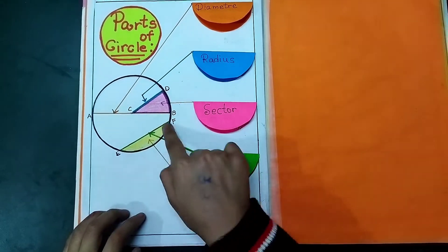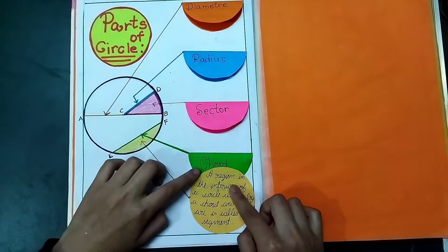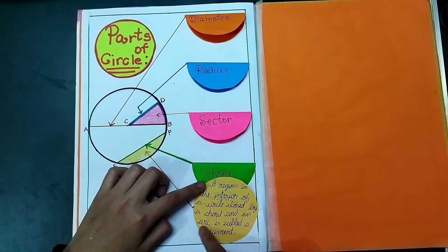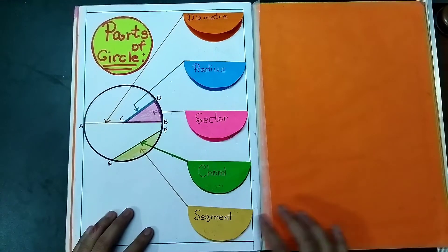Now segment. You can see this golden color. This is segment. A region in the interior of a circle closed by a chord and an arc is called a segment. This was the definition of segment.